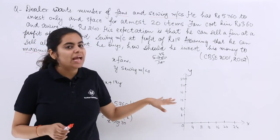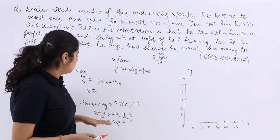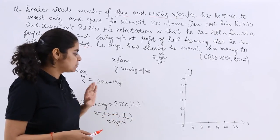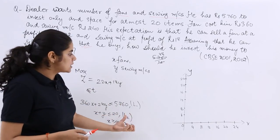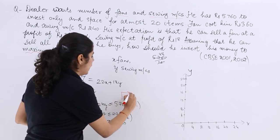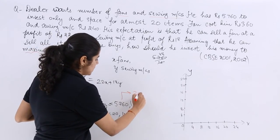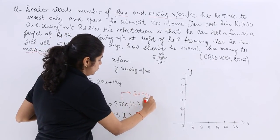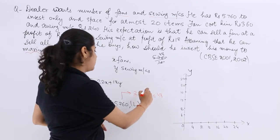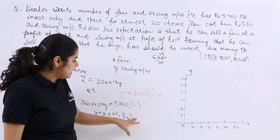Now let's look at the equations. The first constraint 360x + 240y ≤ 5760 simplifies — dividing through by 120 — to 3x + 2y ≤ 48, which we call L1. The second constraint x + y ≤ 20 is called L2. Now we find the intercepts and plot these lines.